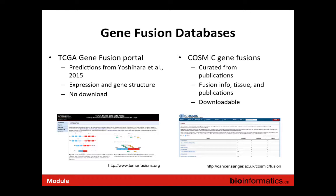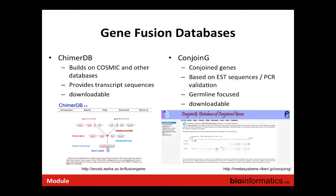Several databases exist for looking up known gene fusions, including the TCGA gene fusion portal — which makes the data from landscape papers searchable — COSMIC, ChimerDB, which builds on COSMIC, and ConjoinedG, which is focused on read-throughs and transcription-induced chimeras.